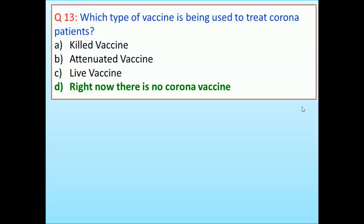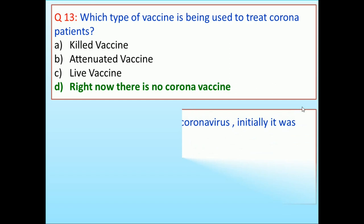Which type of vaccine is being used to treat corona patients? Killed vaccine, attenuated vaccine, live vaccine, right now there is no corona vaccine. Answer is right now there is no coronavirus vaccine.